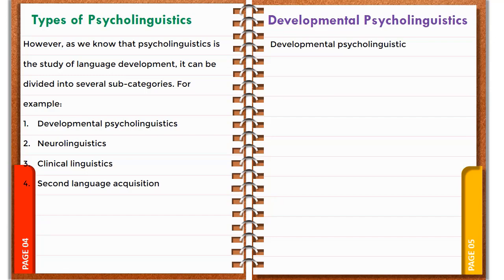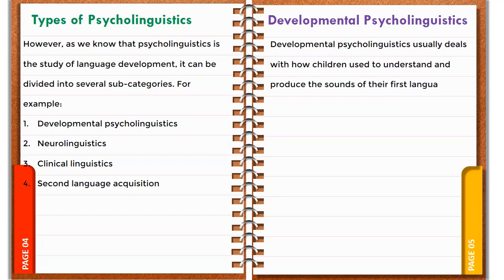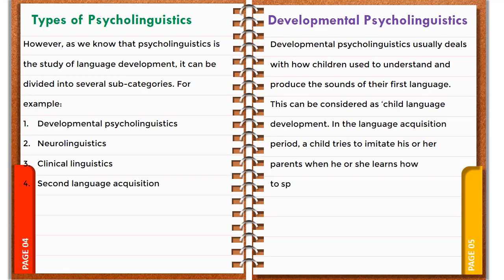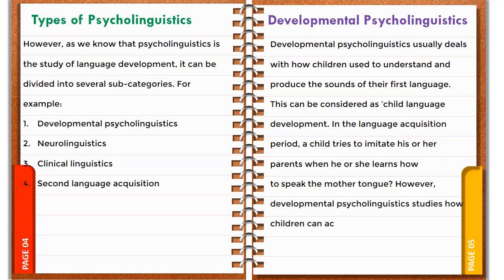Developmental psycholinguistics deals with how children understand and produce the sounds of their first language — this can be considered child language development. In the language acquisition period, a child tries to imitate his or her parents when learning to speak the mother tongue. Developmental psycholinguistics studies how children acquire language and how they formulate linguistic rules.